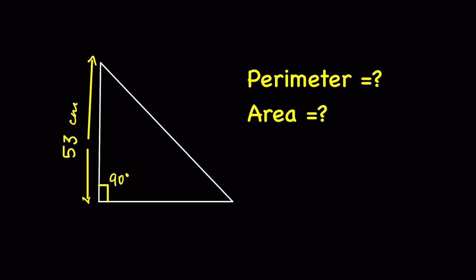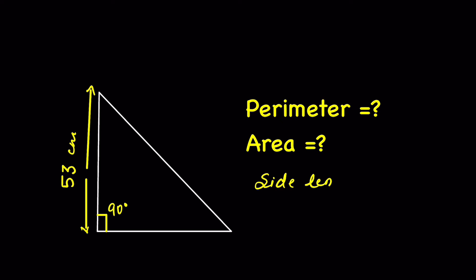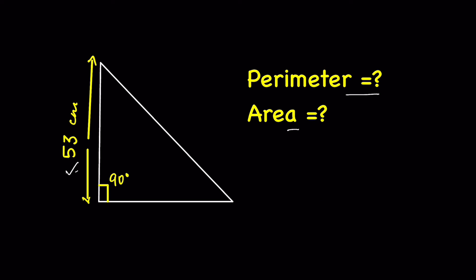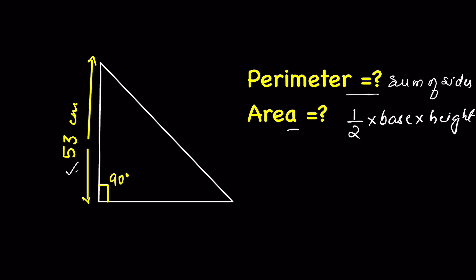Here we have a right angle triangle with one of the sides as 53 centimeters. We have to find the perimeter and the area of the triangle, and the side lengths are all positive integers. Perimeter of a triangle is equal to the sum of all three sides, and area of a right angle triangle is half into base into height.